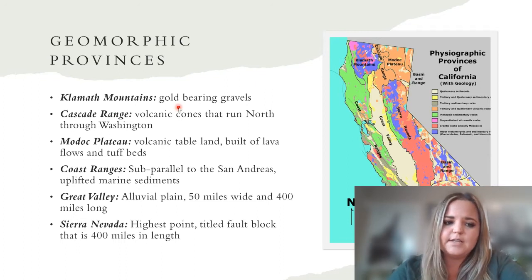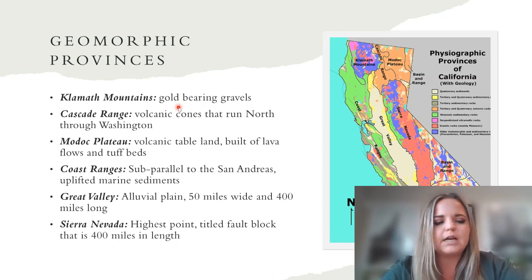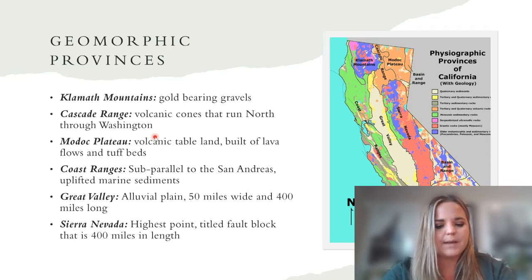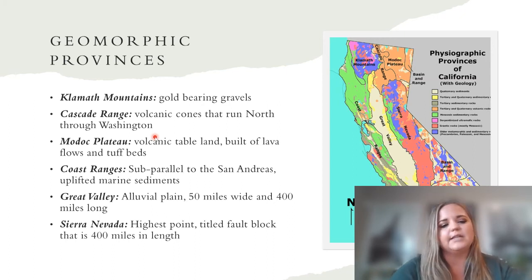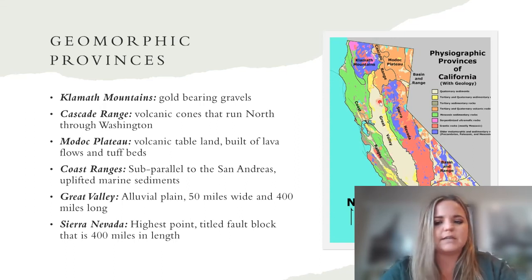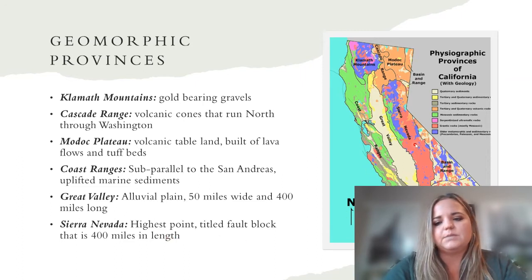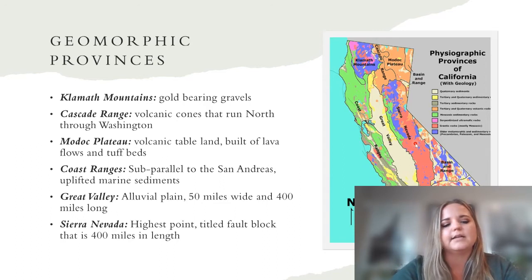The Klamath Mountains are known for their gold-bearing gravels. The Cascades are volcanic cones that extend north into Washington and some into Canada. The Modoc Plateau is a volcanic tableland built of lava beds and tuff beds — tuffs are basically rocks filled with volcanic ash. The Coast Ranges are subparallel to the San Andreas and consist of uplifted marine sediments. The Great Valley is an alluvial plain, 50 miles wide and 400 miles long, filled with sediments from the Coast Ranges and Sierra Nevada. The Sierra Nevada has the highest point, Mount Whitney, and is a tilted fault block 400 miles in length.